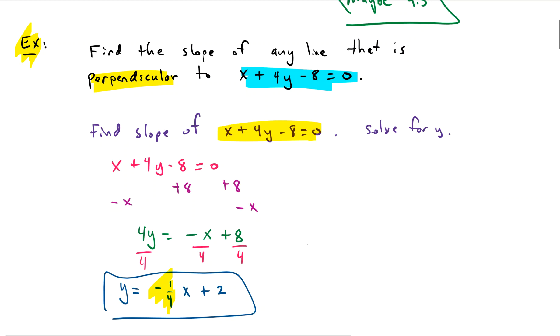So if the slope of the equation we're given is negative 1 fourth, then the slope of the line that we want that's perpendicular has got to be the negative reciprocal. So we'll call that slope M prime.